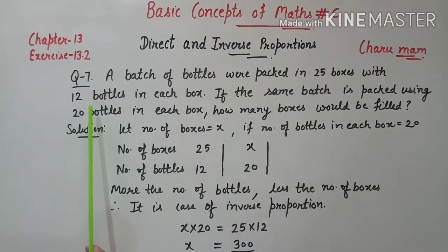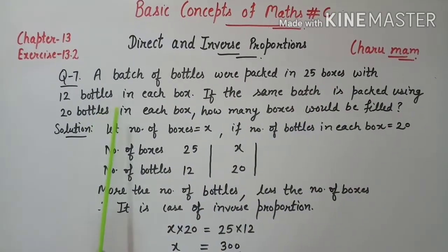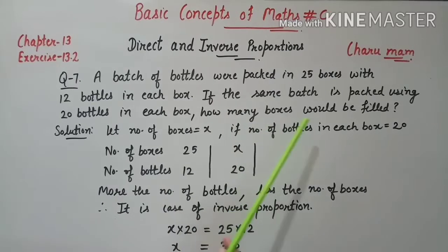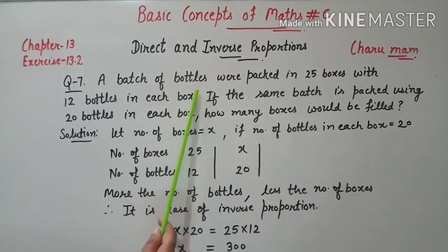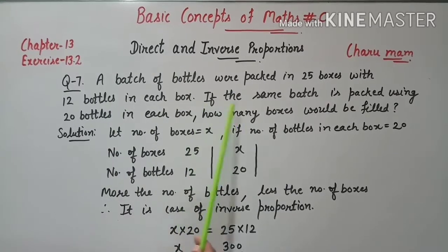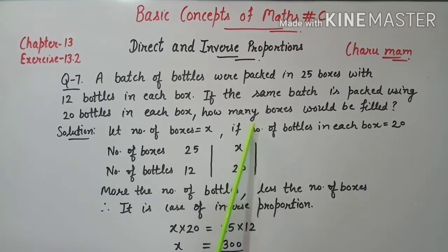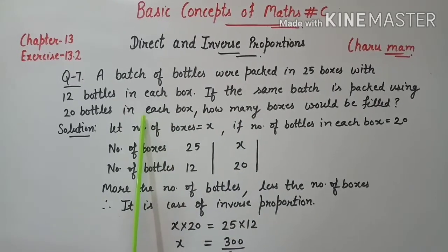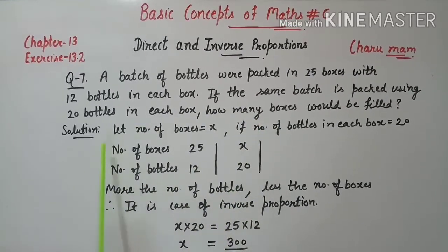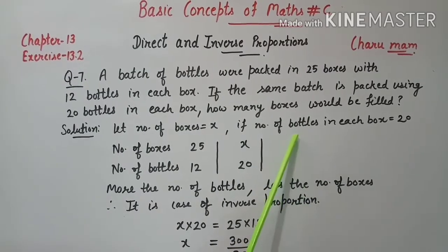Now Question 7 statement: A batch of bottles was packed in 25 boxes with 12 bottles in each box. If the same batch is packed using 20 bottles in each box, how many boxes would be filled? यानि कि same batch को 20 bottles per box से pack करें तो कितने boxes लगेंगे — हमें number of boxes find करने हैं। हमने let किया number of boxes = x, if number of bottles in each box is 20.